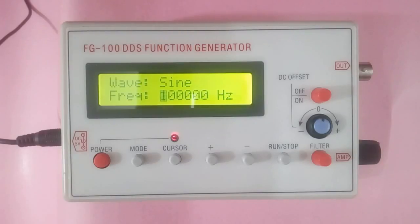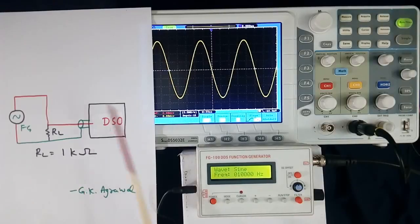Type number of function generator which I am going to explain is FG100DDS. This is setup. This is function generator, very small type, hobby type, scope.